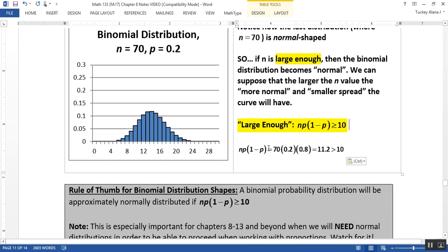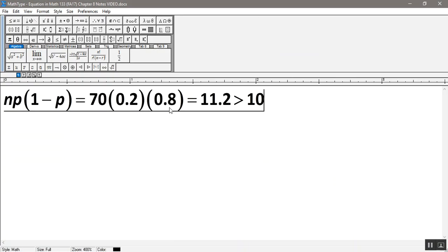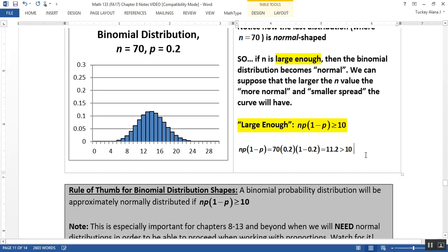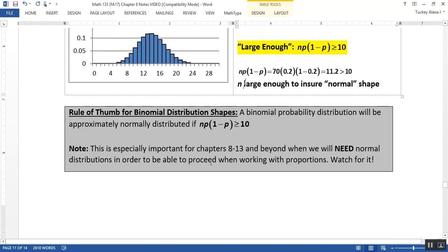So large enough will be n times p times (1-p) is greater than 10, which for 70 it is. If you put 70 in for n, p is 0.2, 1 minus p is 0.8, then that will be 11.2 with a calculator, which is in fact greater than 10. So we have n large enough to ensure normal shape.